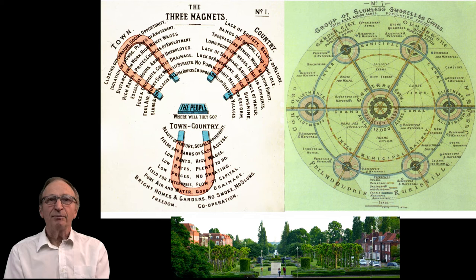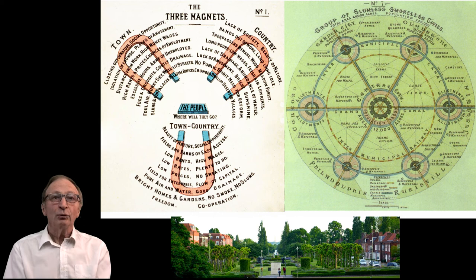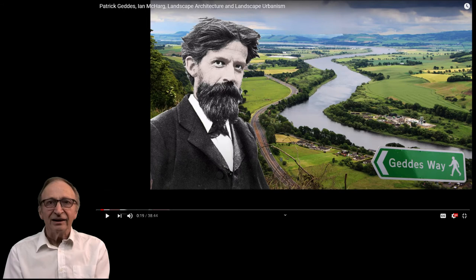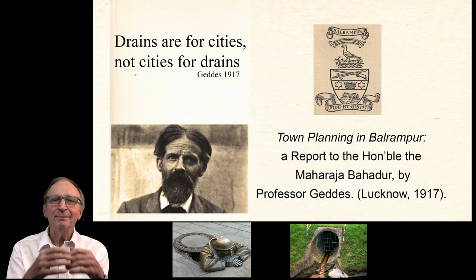Third, the belief that we should plan for people to enjoy the benefits of both town life and country life comes from Ebenezer Howard, and was illustrated with his inspiring three magnets diagram. Fourth, the belief that single-objective projects should be re-planned as multi-objective projects comes from Patrick Geddes and Ian McHarg. Geddes wrote, for example, that drains are for cities, not cities for drains.